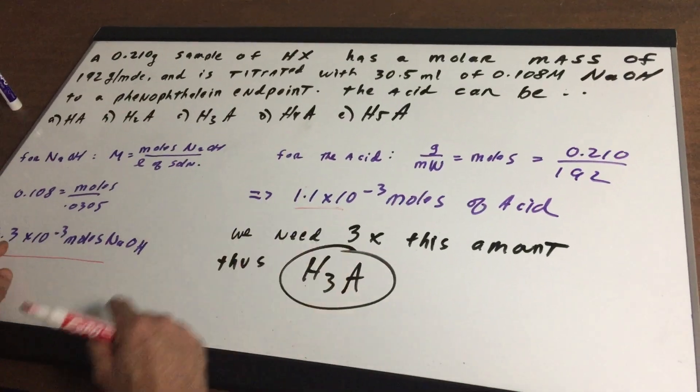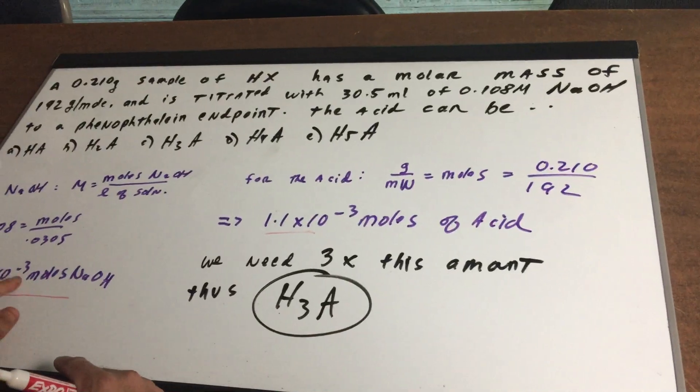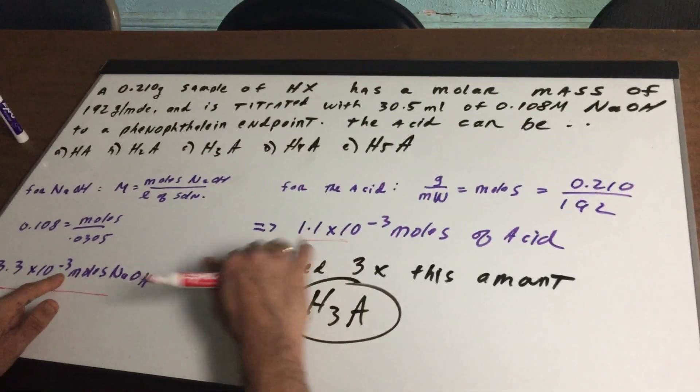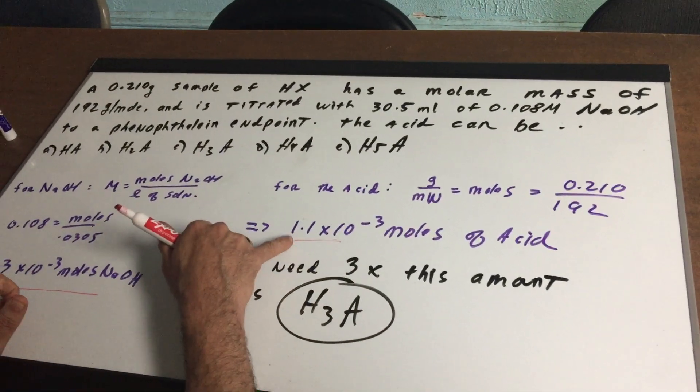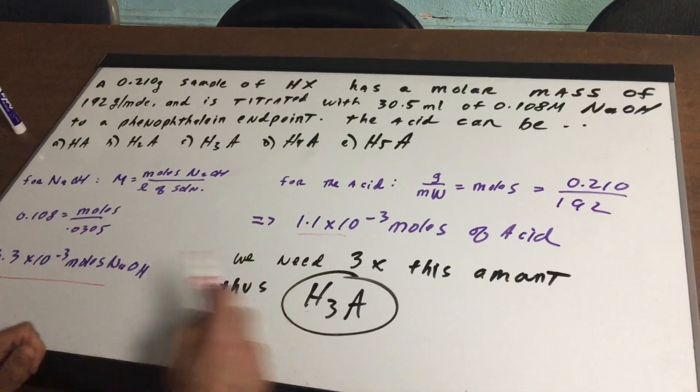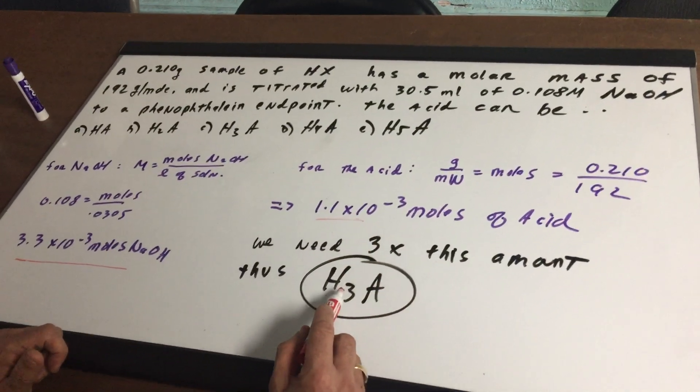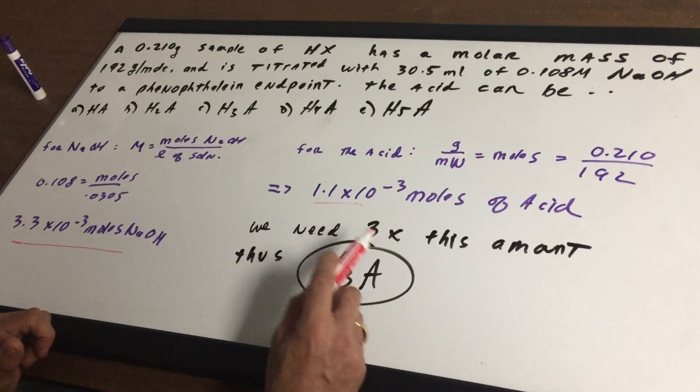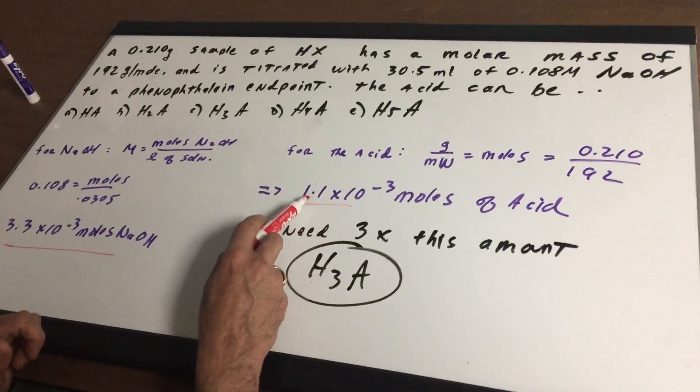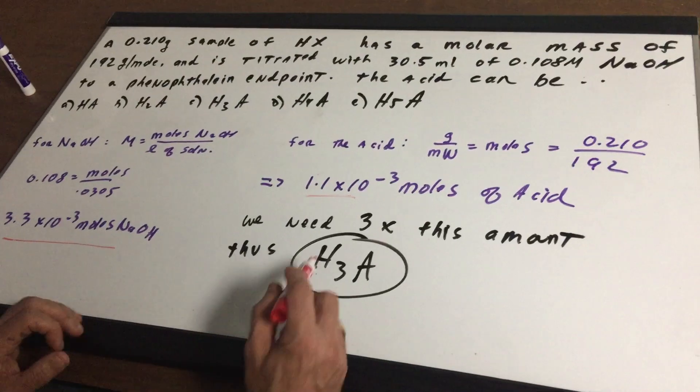So obviously if we need to get up to 3.3 times 10 to the minus 3 and we have this, we need 3 times the amount. So we need to have this tripled. So the only way that the moles of acid is tripled is if you had H3A. And that would give off 3 moles of this and that would come out to the 3.3 times 10 to the minus 3.